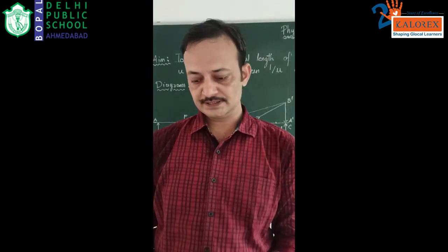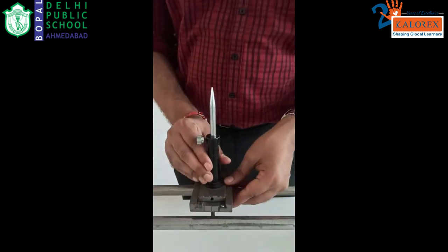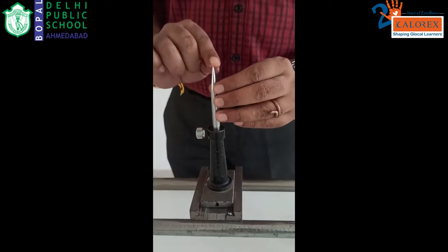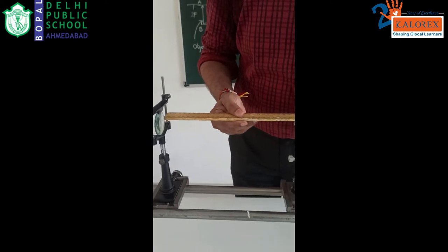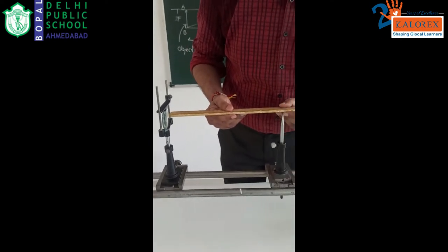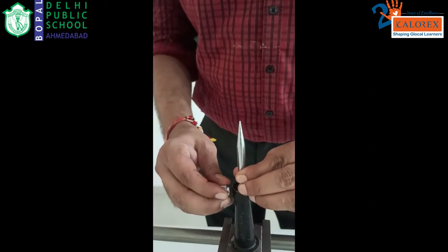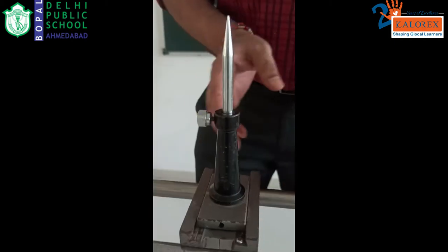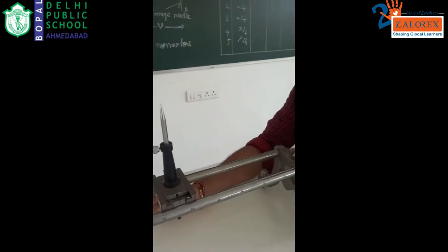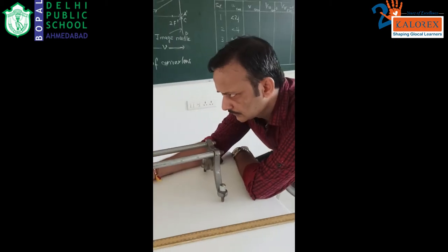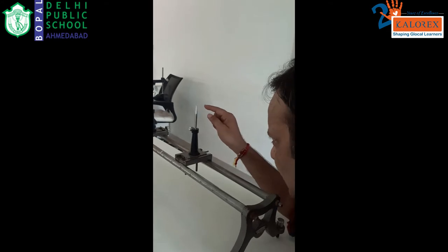Now we are going to discuss how to place the image needle to locate the position of the image. We will place the image needle — which is similar to the object needle — on the other side of the lens, and adjust the tip of the image needle to coincide with the optic centre using the scale. The coincidence is between the inverted image tip and the tip of the image needle.